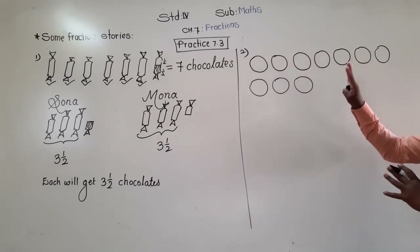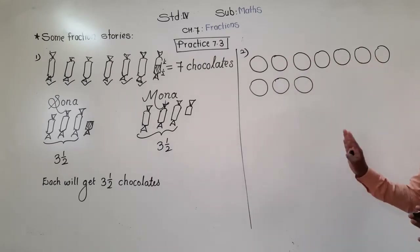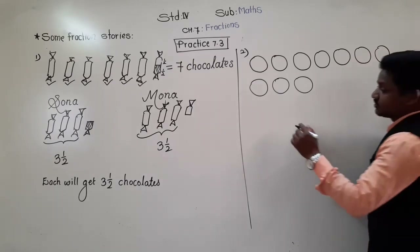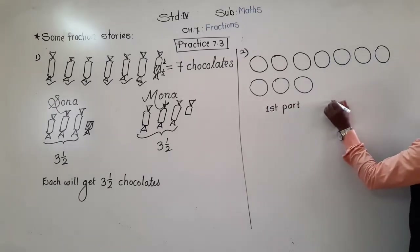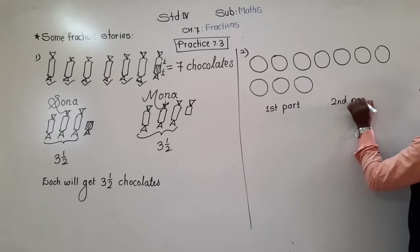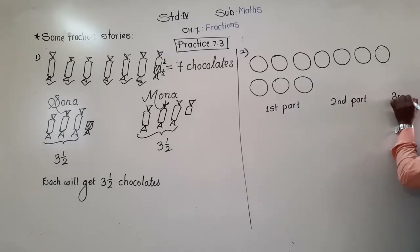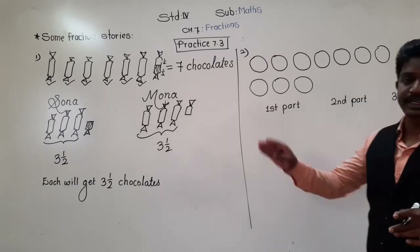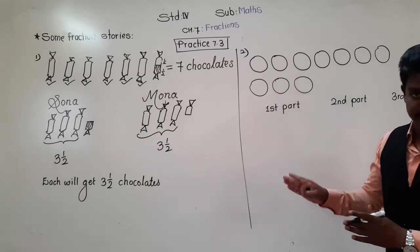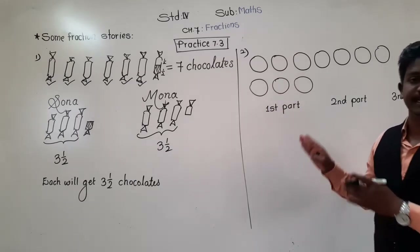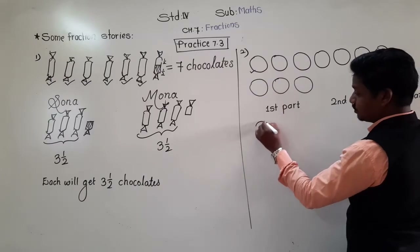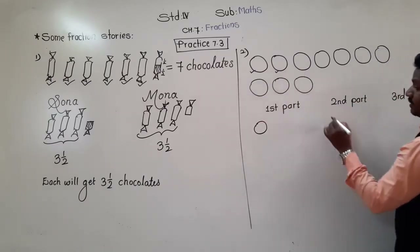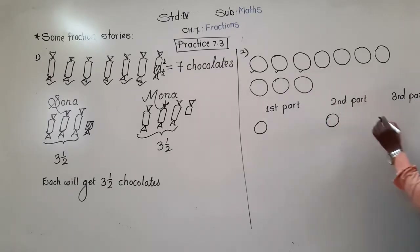Consider all chapatis equal. We have to make 3 parts: 1st part, 2nd part, and 3rd part. Each part must have equal chapatis. So the 1st chapati goes in the 1st part, 2nd chapati in the 2nd part, 3rd chapati in the 3rd part.